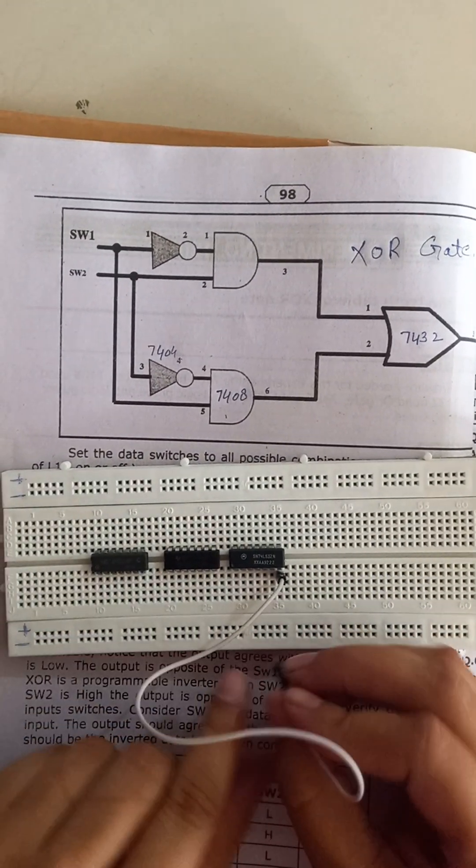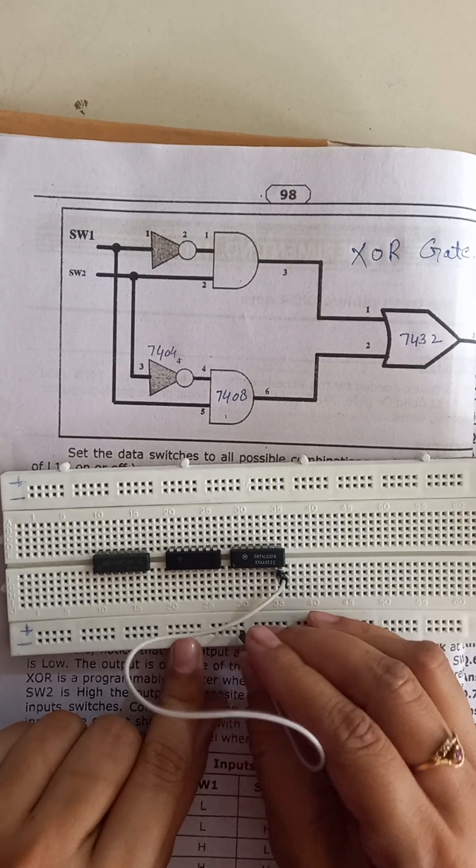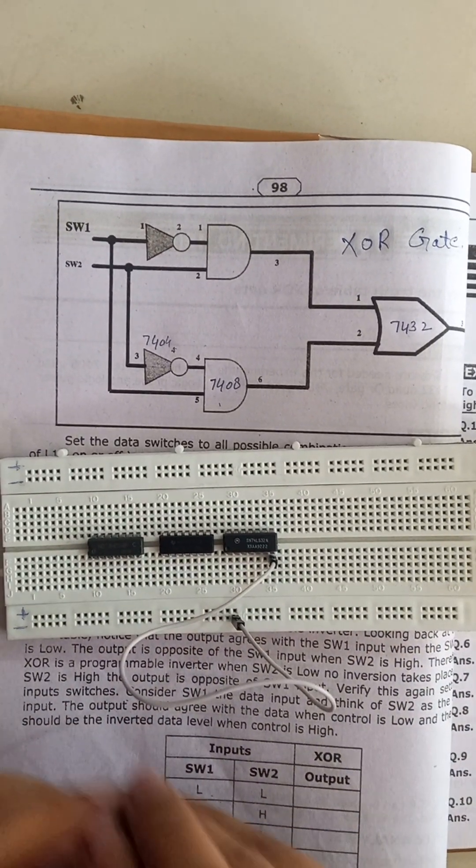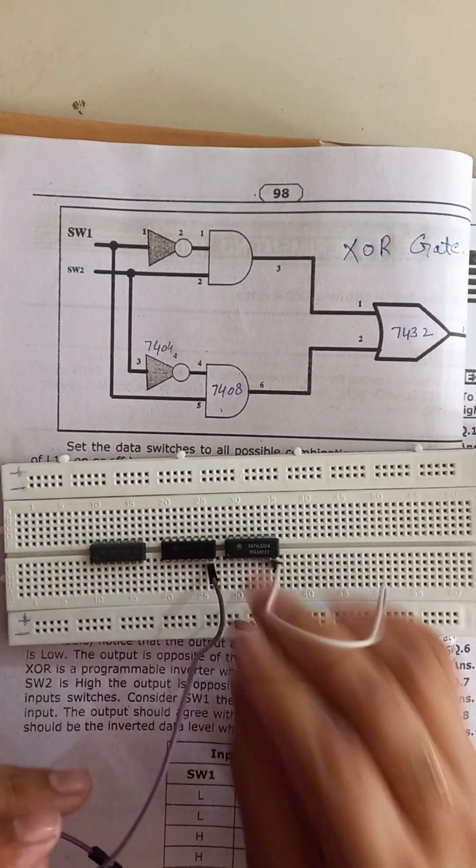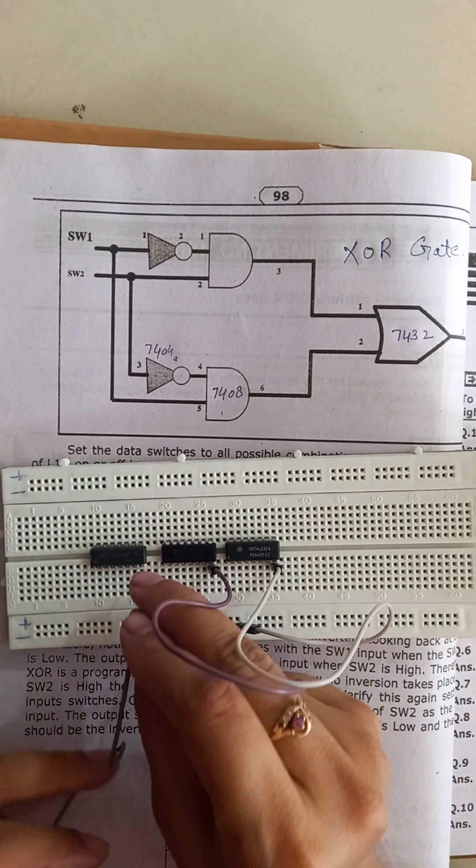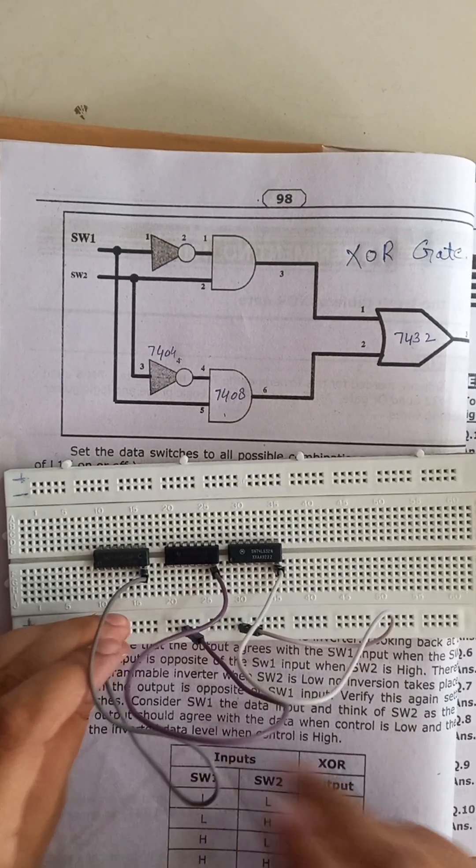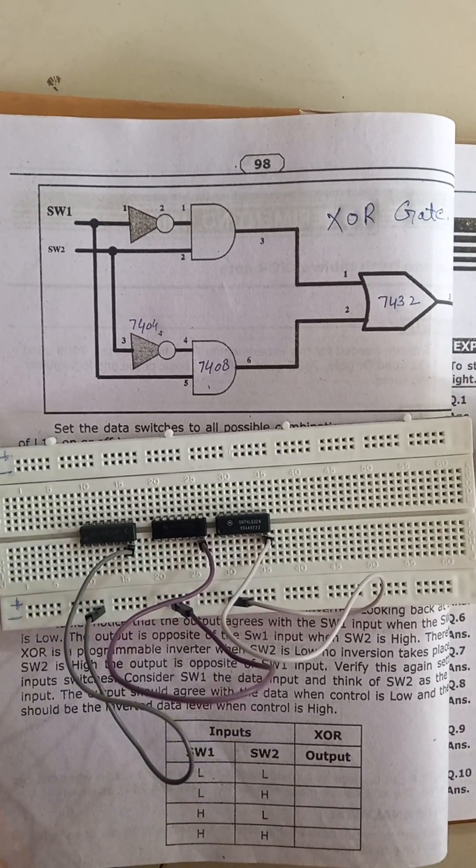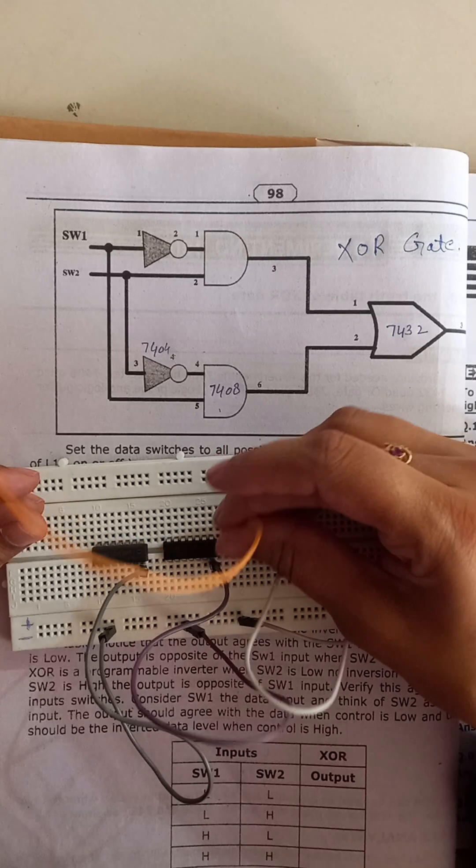So all ICs should be ground on the negative terminal. Pin number 7 and pin number 14 should be plus VCC connected with the plus VCC.